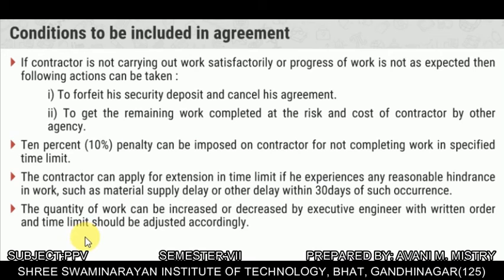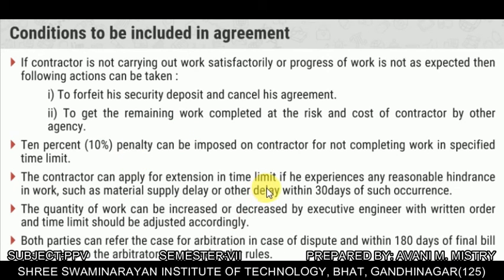The quantity of work may be increased or decreased by the Executive Engineer with prior order, and the time limit should be adjusted accordingly. Both parties can refer the case to arbitration in case of dispute within 180 days of the final bill, and an arbitrator is appointed under the rules.